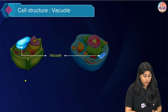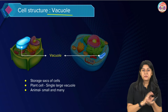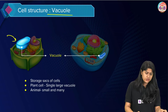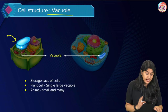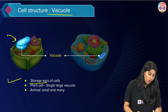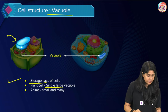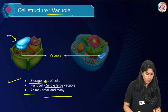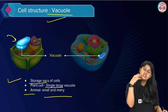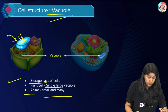Vacuoles are the next very important organelle. In plant cells the vacuole is definitely bigger and is usually the largest organelle, whereas in animal cells vacuoles are really very small and multiple in number. The main function of the vacuole is storage. In plant cells we see a single large vacuole; in animals we see small, many vacuoles scattered throughout the cell. Vacuoles also help in providing structure to the cell.